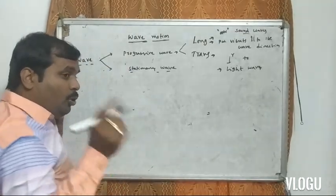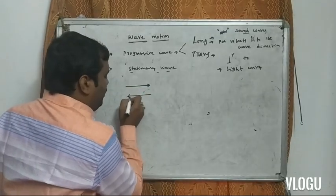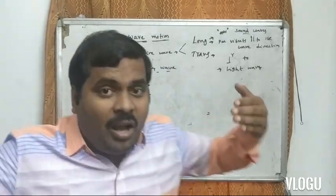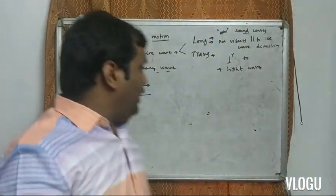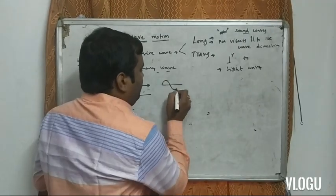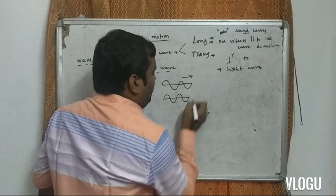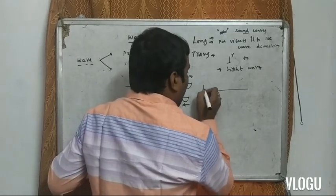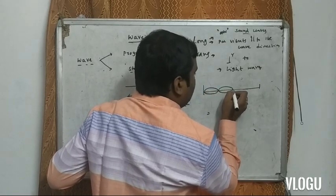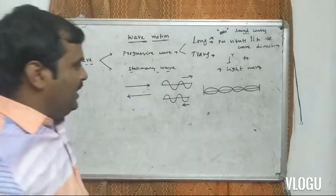Another type of wave is a stationary wave. If two progressive waves travel in opposite directions, the resultant consists of loops. This type of wave is known as a stationary wave or standing wave.